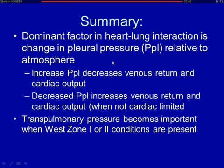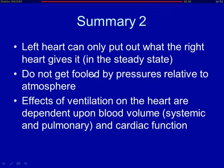To finish: the dominant factor in heart-lung interactions is the change in pleural pressure relative to atmosphere. An increase in pleural pressure decreases venous return and cardiac output. A decrease in pleural pressure increases venous return and cardiac output when cardiac output is not limited. Transpulmonary pressures become important when you develop West Zone 1 and 2 conditions. The left heart can only put out what the right heart gives it in steady state. Don't get fooled by pressures relative to atmosphere. And the effects of ventilation on the heart are dependent upon blood volume — systemic and pulmonary — as well as cardiac function. Thank you.